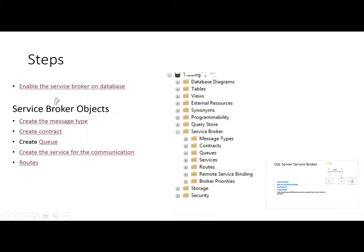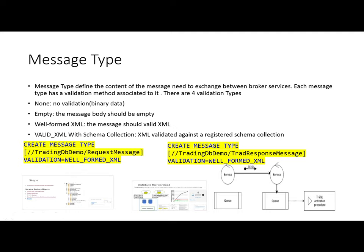After enabling the service, we can go into SQL Server Management Studio and on our hosting database we can find a menu called Service Broker. Under this menu we can find the objects required to create a service, and the first one is the message type. So we have to first create the message type.